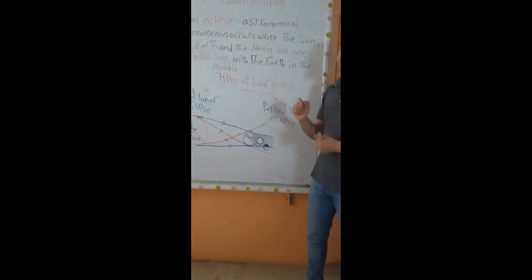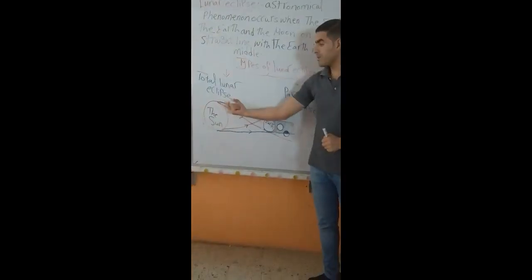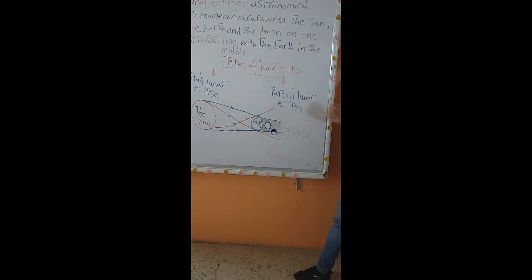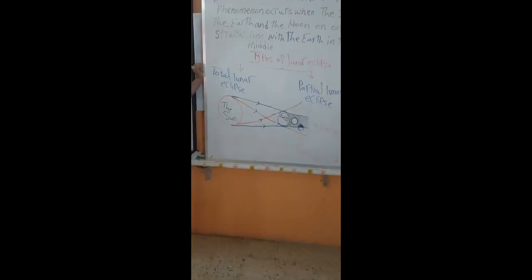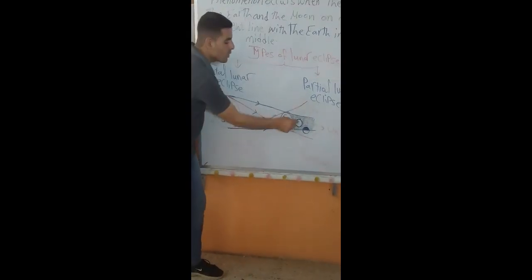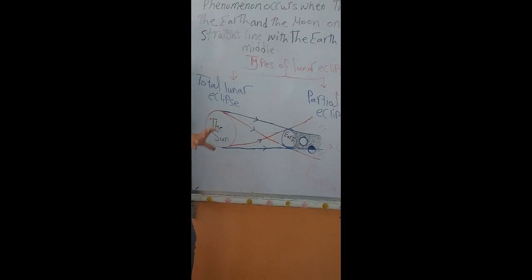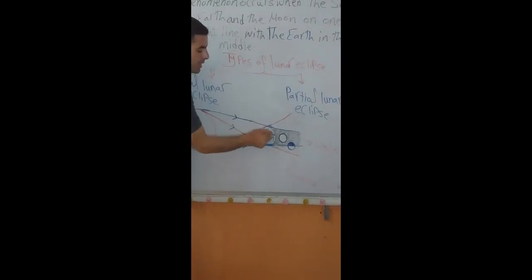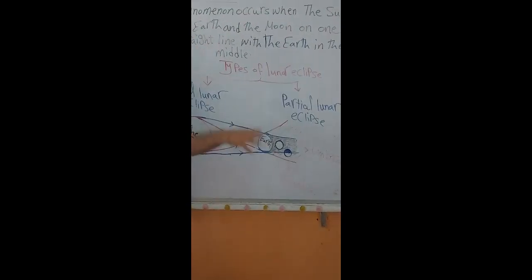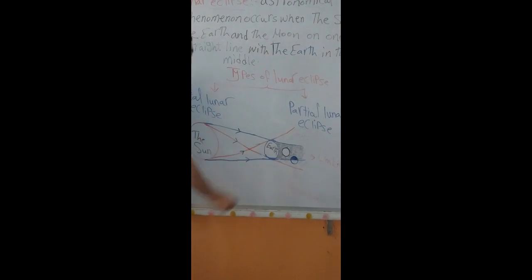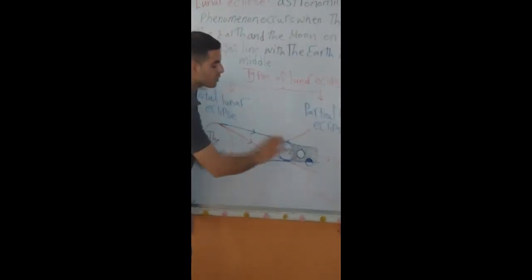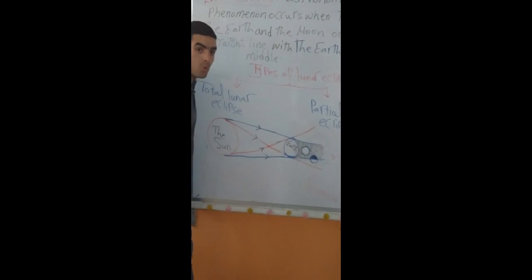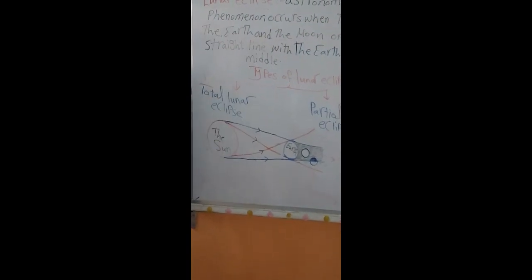Lunar eclipse has two types, which are total lunar eclipse and partial lunar eclipse. Total lunar eclipse occurs when the moon is totally blocked by the shadow area of the Earth — it is completely located in the umbra of the Earth. So the total radiation of the sun is blocked by the Earth from the moon, and it is said to be total lunar eclipse.